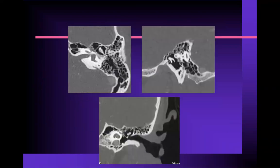Here's an example. These images were acquired in the axial plane, and notice that in the coronal and sagittal reconstructions there are no stair-step artifacts. It looks as if the patient were scanned in the sagittal or coronal plane, but these are reconstructed images from the axial data set.